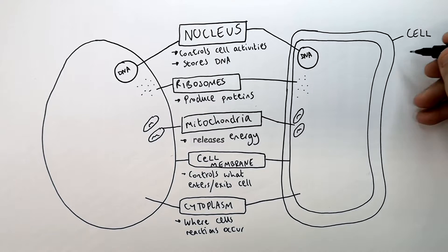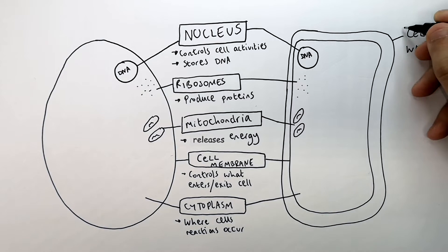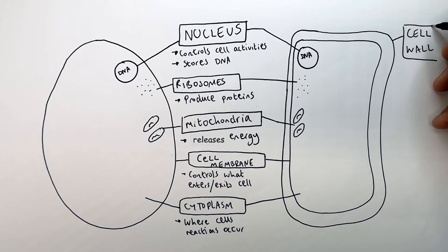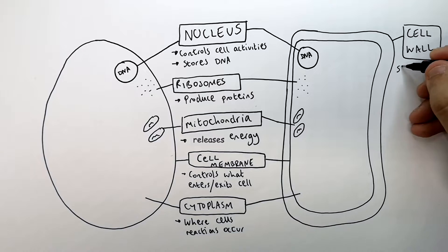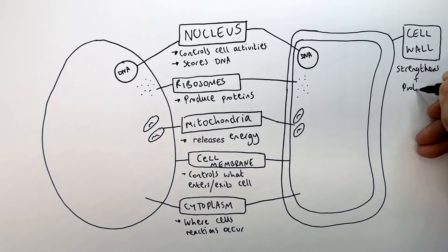So on to plant cells. The plant cell has a cell wall which is outside of the cell membrane, and this strengthens and protects the cell.